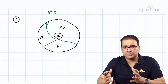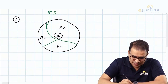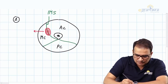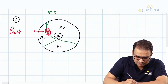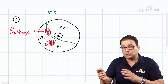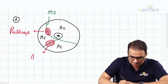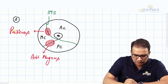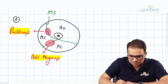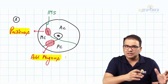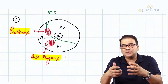A muscle present in both the anterior and medial compartments, piercing the intermuscular septum, is the pectineus. Similarly, the muscle present in both the medial and posterior compartments is the adductor magnus. These muscles extend beyond one compartment, so they are supplied by the nerves of both compartments. Being two-compartment muscles, they are regarded as hybrid muscles.